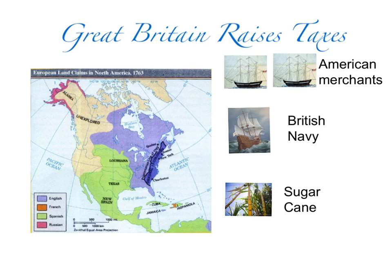Great Britain won the war for the colonists, but Parliament still had to pay for the war. In order to pay for the war, they decided to implement some new taxes on the colonists, and the first one was the Sugar Act.